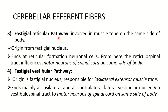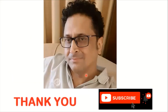Number three is the fastigioreticular pathway, involved in muscle tone on the same side of the body. Its origin is from the fastigial nucleus, ending at the reticular formation; the reticulospinal tract then influences motor neurons of the spinal cord on the same side. The fastigiovestibular pathway, also originating from the fastigial nucleus, is responsible for ipsilateral extensor muscle tone, ending mainly at the ipsilateral and contralateral lateral vestibular nuclei via the vestibulospinal tract to motor neurons on the same side. All four efferent pathways control the ipsilateral side of the body.